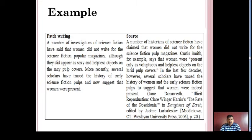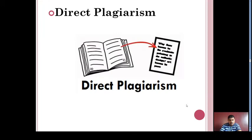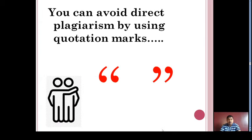In the example of mosaic plagiarism shown on screen, patch writing involves framing a sentence without quotation marks, along with substitution of synonyms, omission of occasional words or phrases, and often retention of the same sentence structure as the original source. You can observe on your screen that in the patch writing version, only synonyms are replaced from the original source.